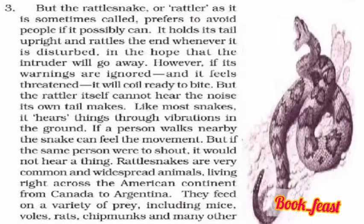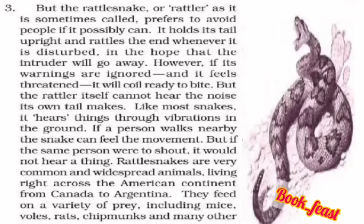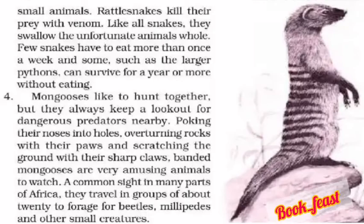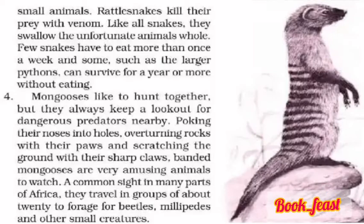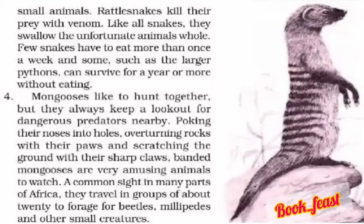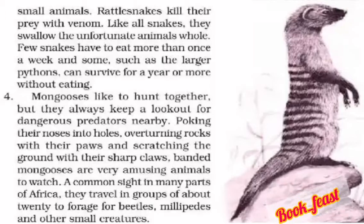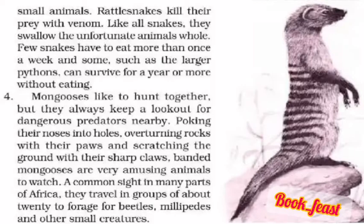Rattlesnakes eat a variety of prey including rats and chipmunks. Chipmunks are also an animal they eat. When hunting, the rattlesnake uses venom — its poison — to subdue the prey. The prey is given the venom and then consumed. They eat one prey at a time.